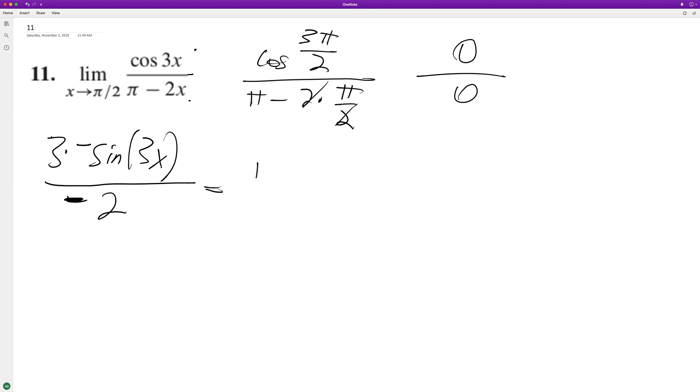So this is the limit as x approaches pi over two for negative three sine of three x over negative two. So these negatives cancel out.